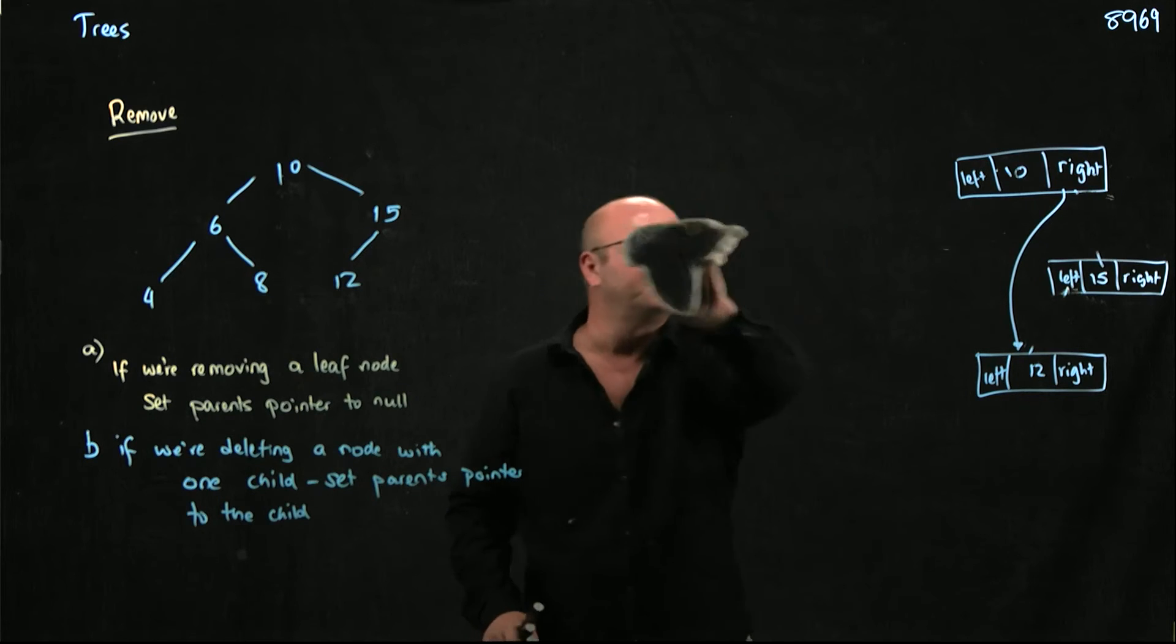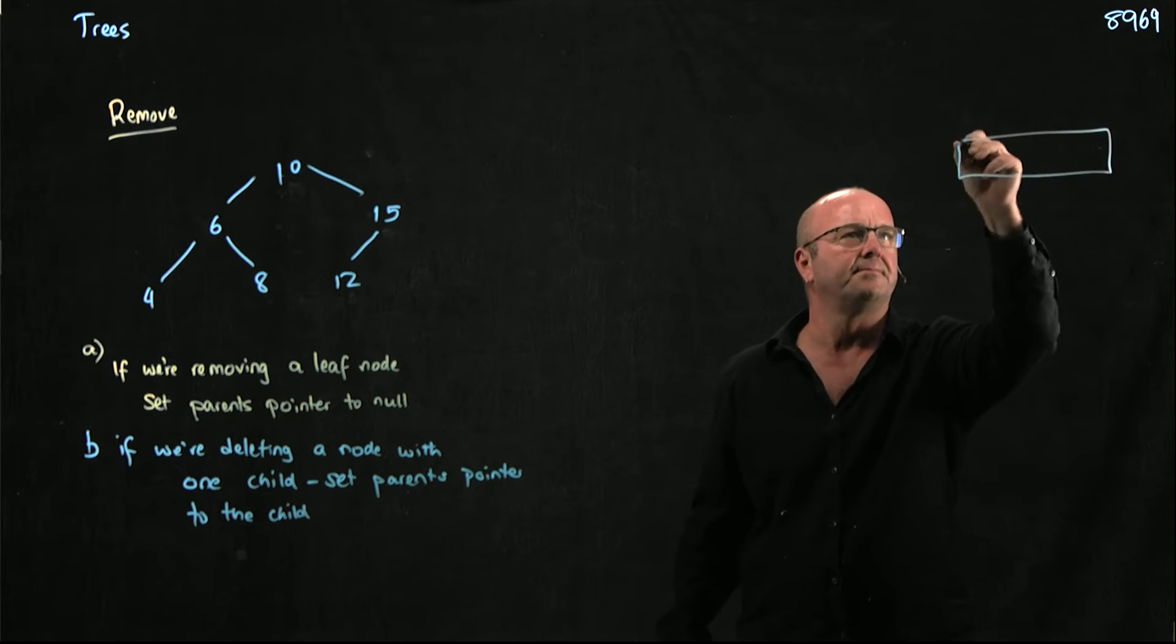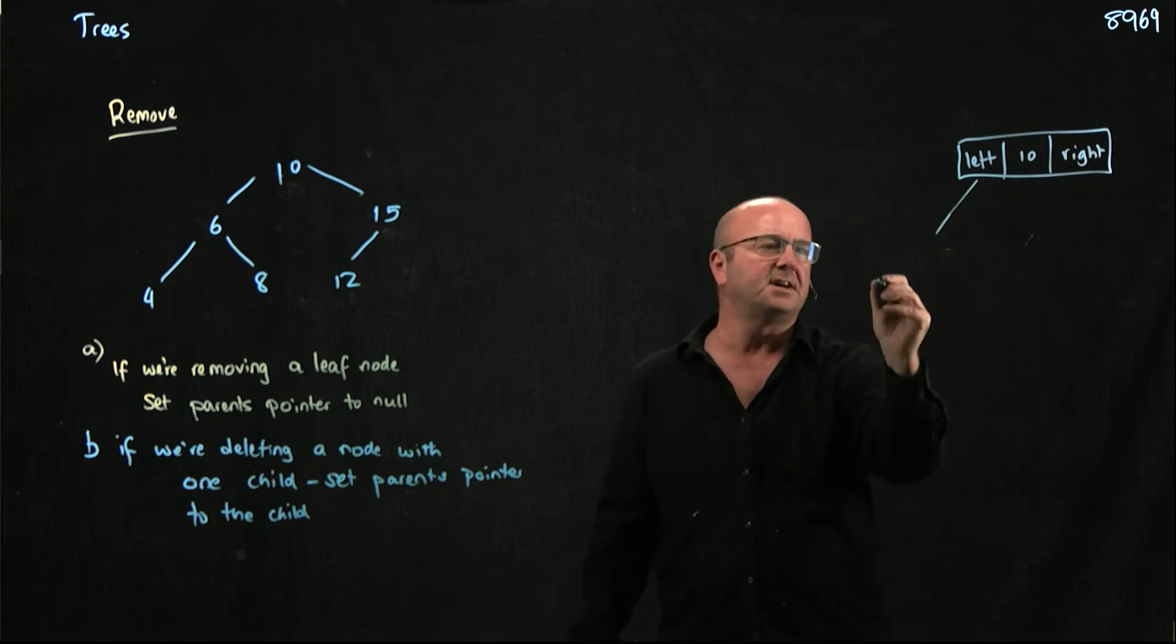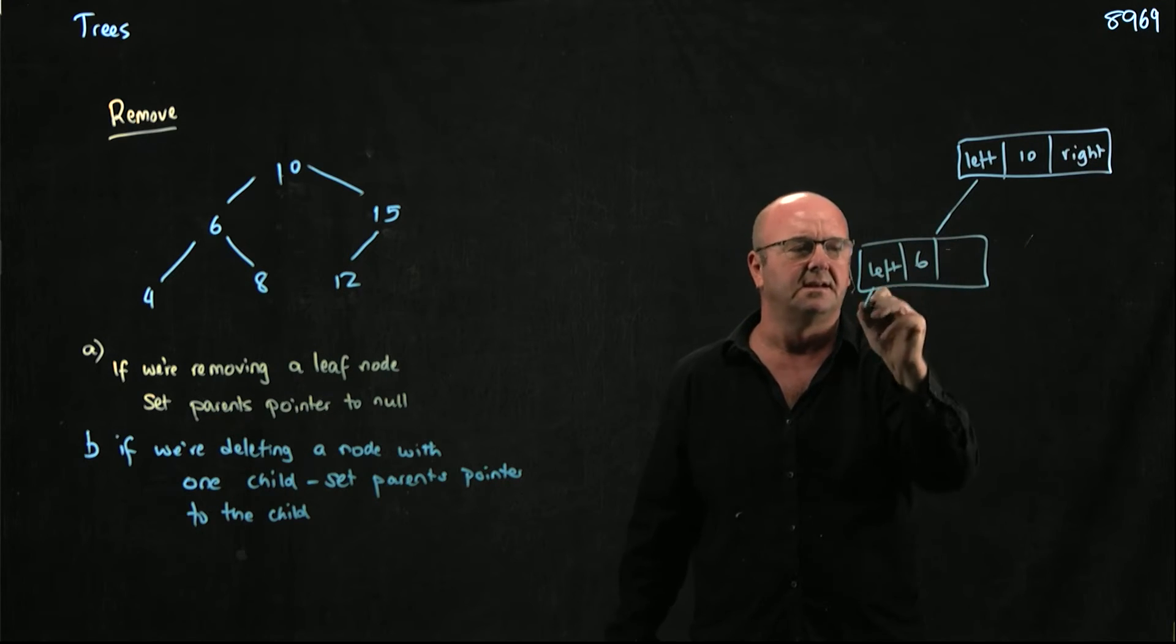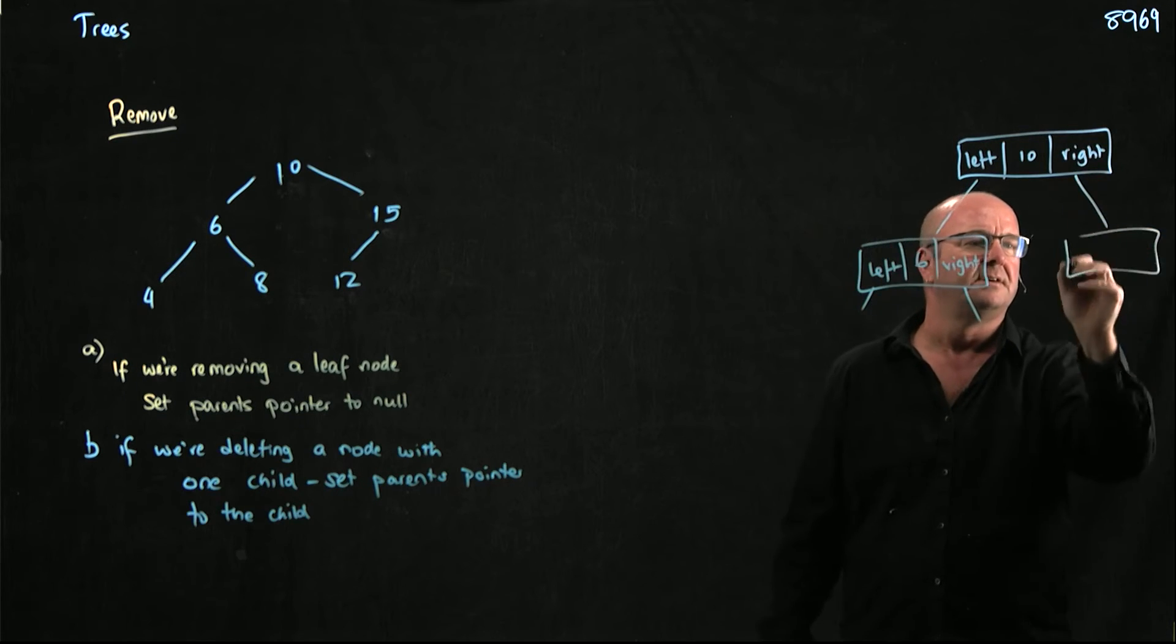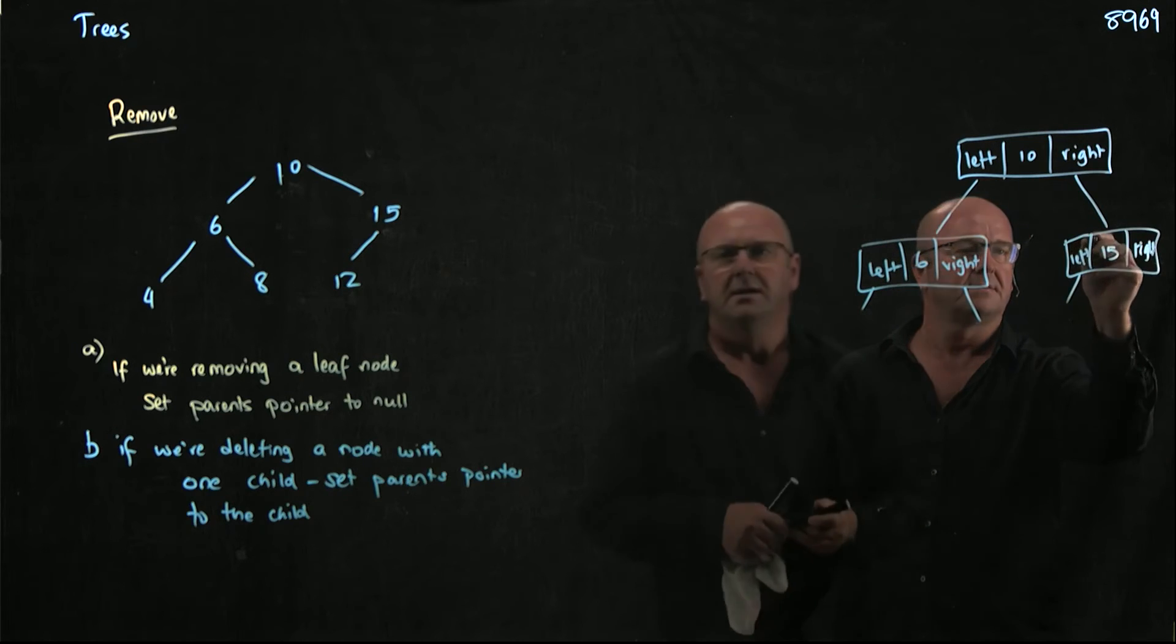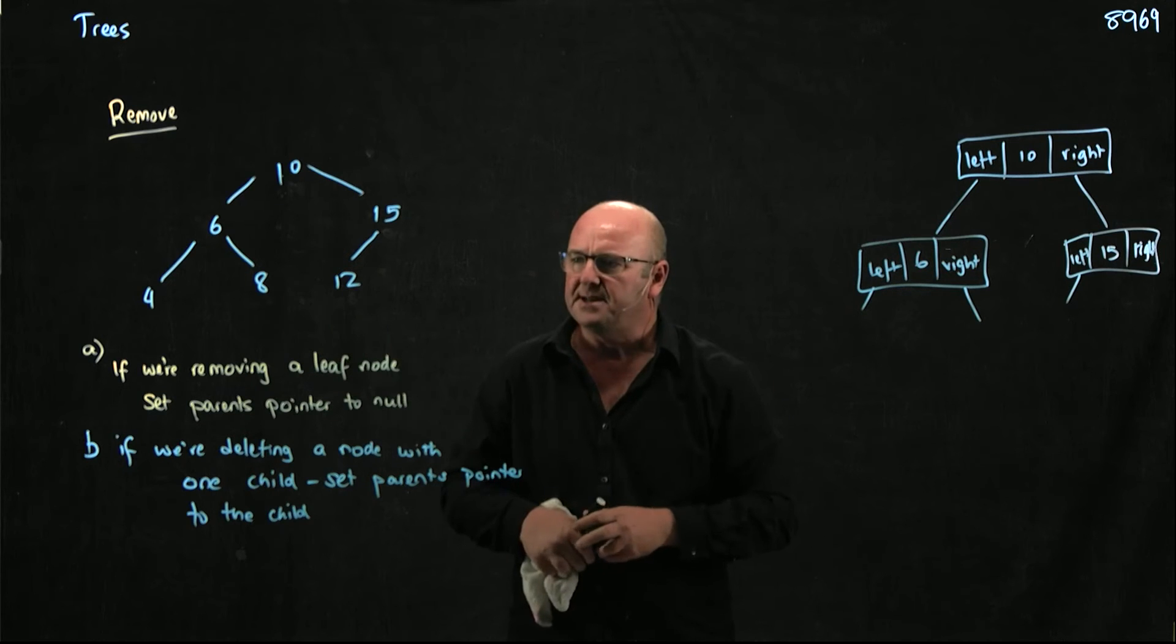What about if we want to delete 10? Let's delete the 10 because that caused me trouble. Here's left. Here's 10. Here's right. So the left child of the 10 is the 6. That has children. And the right child of the 10 is the 15. And that has one child. So what are we going to do? We've got the 10, the 6, and the 15. How are we going to delete that?